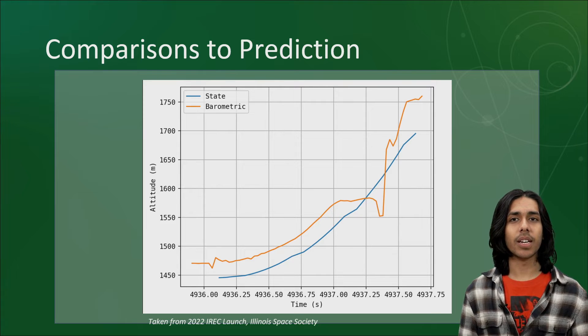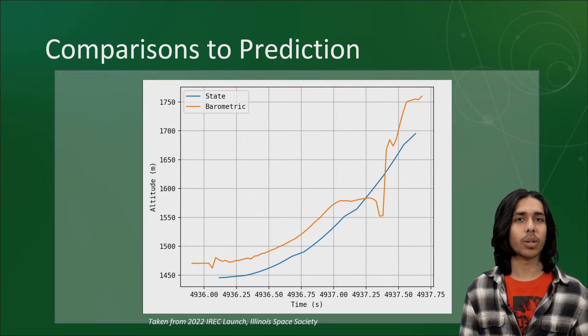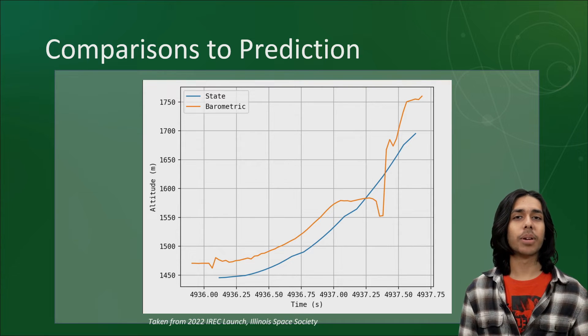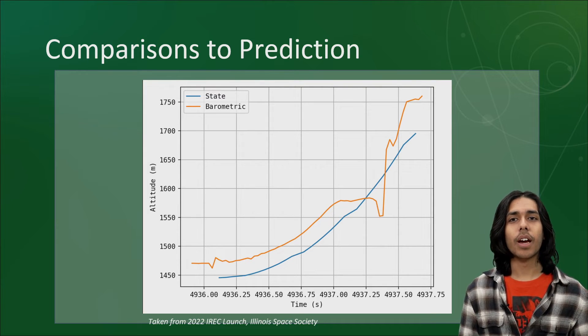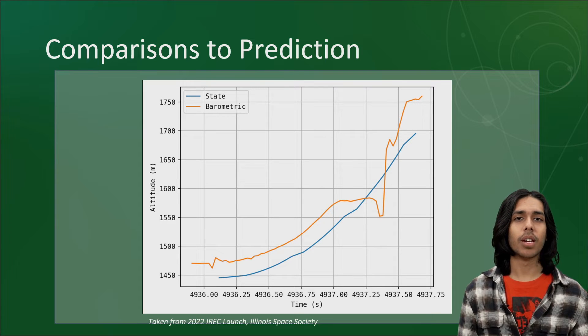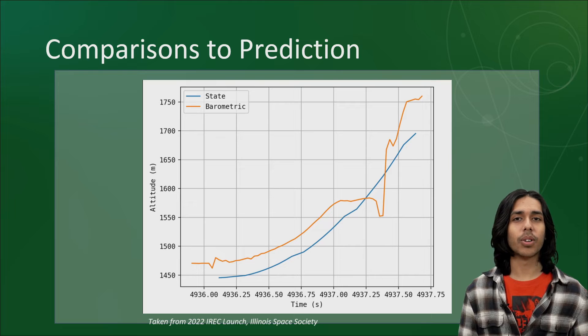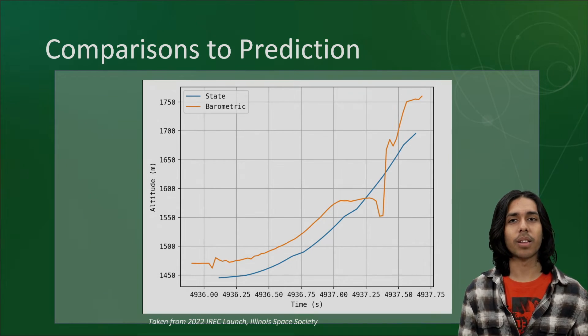It's also a good chance to see if the assumptions we made in developing our equations of motion were valid in real life. For example, if your predicted apogee was 200 feet and your rocket only went 160 feet, maybe you didn't account for air resistance, or maybe the rocket flew in a crooked path rather than the assumed perfectly vertical path.